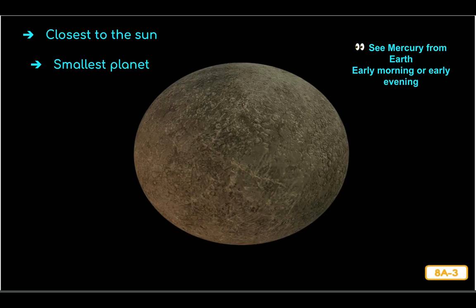Mercury is one of the closest planets to the Sun and the smallest of the eight major planets in the solar system. Being the smallest and closest to the Sun makes Mercury unique. Mercury can be seen from Earth, but it is hard to spot — you can only see it in the early morning or the early evening.